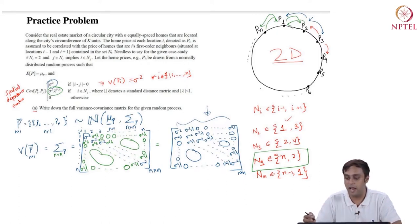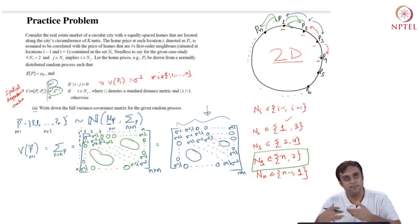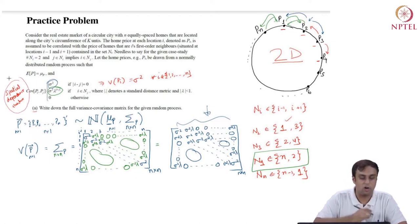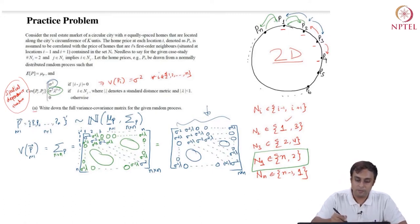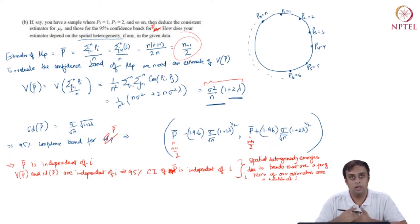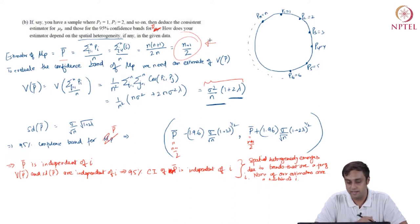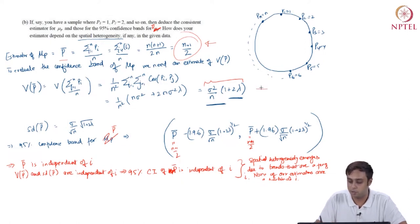We were basically working with first-order neighbors on a circle. We had entities P1, P2, P3, P4, denoting both prices as well as location. The index on the price P is the location — location 1, 2, 3 with corresponding price P1, P2, P3 respectively, all the way till location n. We are given a specific spatial dependence structure. For this particular scenario, we estimated the population mean — the best guess being P-bar — with an analytical solution of (n+1)/2, the variance of P-bar as σ²/n × (1 + 2λ), the standard deviation estimator, and the confidence bounds.